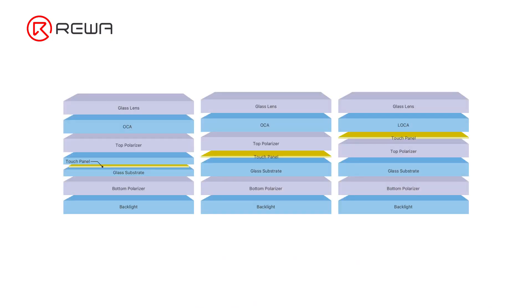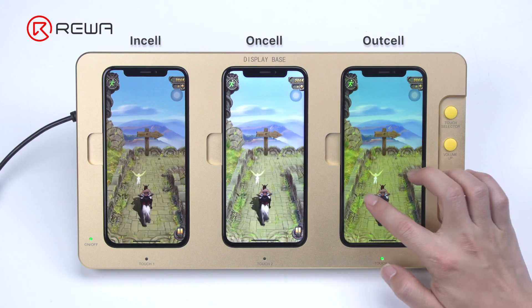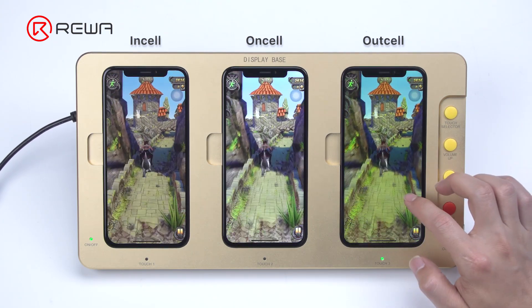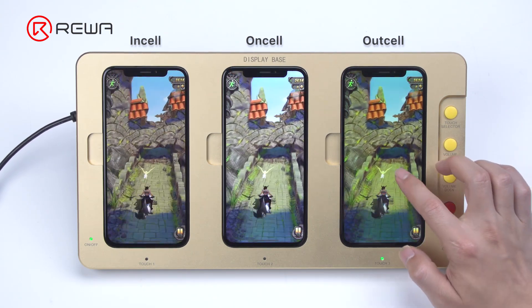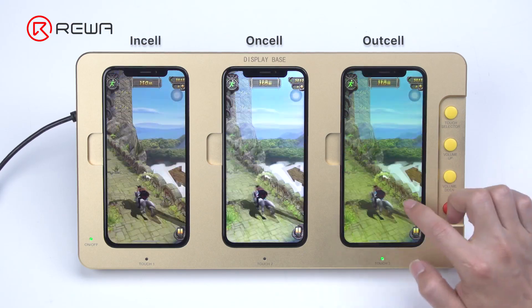According to different structures of the touch panel, the screen assembly can be divided into in-cell, on-cell, and out-cell. The biggest difference is the position of the touch panel. In-cell's touch panel is embedded in the glass substrate, on-cell is above the glass substrate and under the polarizer, while out-cell is above the polarizer and under the glass lens. In-cell has the best stability and response speed, followed by on-cell and out-cell.